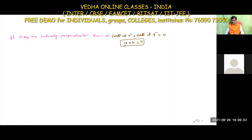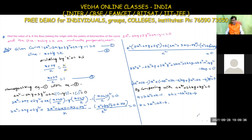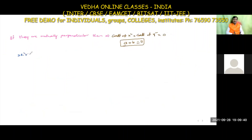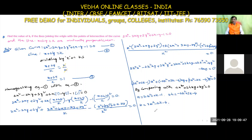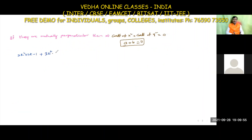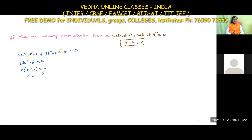Substituting: (2k² + 2k - 1) + (3k² - 2k - 4) = 0. This gives 5k² + 0k - 5 = 0, since 2k and -2k cancel. So 5(k² - 1) = 0, meaning k² = 1.